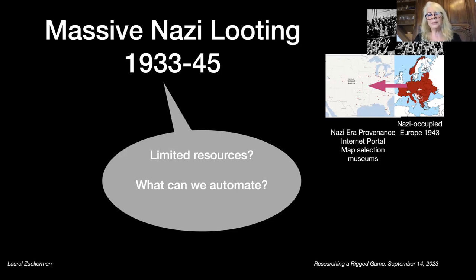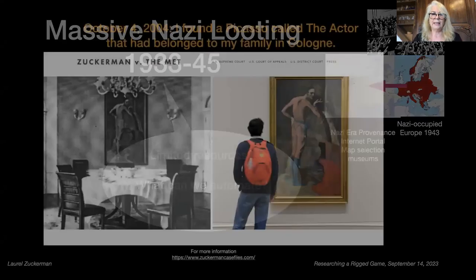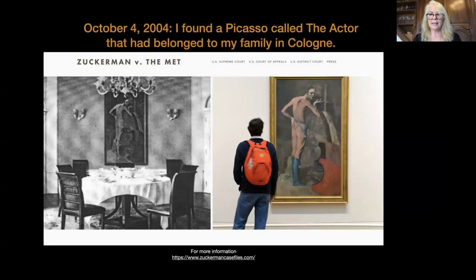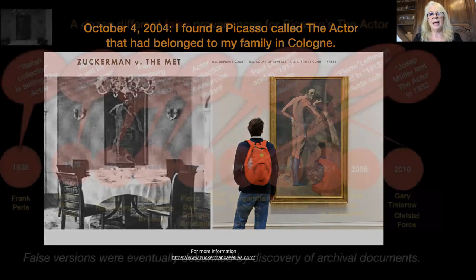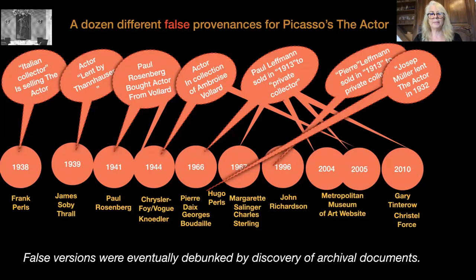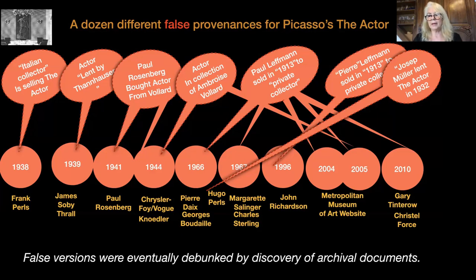The way I got involved in this question was due to my own personal history. In 2004, I found on the website of the Metropolitan Museum of Art a Picasso called The Actor, that had belonged to my family in Cologne before Hitler came to power. It hung in the dining room of my great-granduncle, Paul Leffman — you can see that photo of the dining room on the left. When I discovered the artwork, I was surprised to see that it had a false provenance, and the more we researched it, the more false provenances we found, going all the way back to 1938, created by many different people telling different false stories at different times, eventually debunked by archival documents.